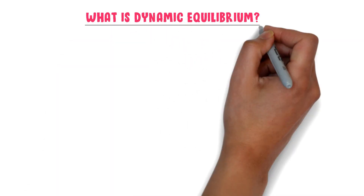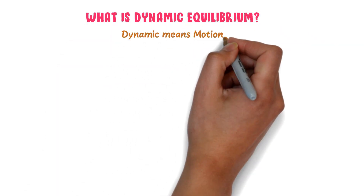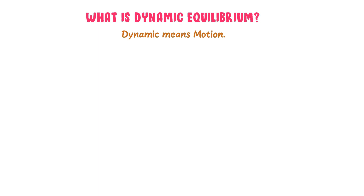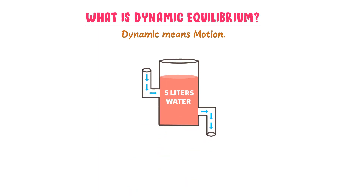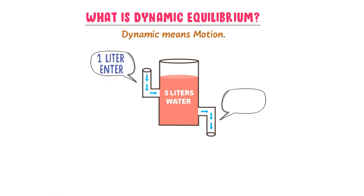What is dynamic equilibrium? The word dynamic means motion. Now let's consider this system. Let there be 5 liters of water present in this object. Now 1 liter of water is entering into the vessel and 1 liter of water is exiting.